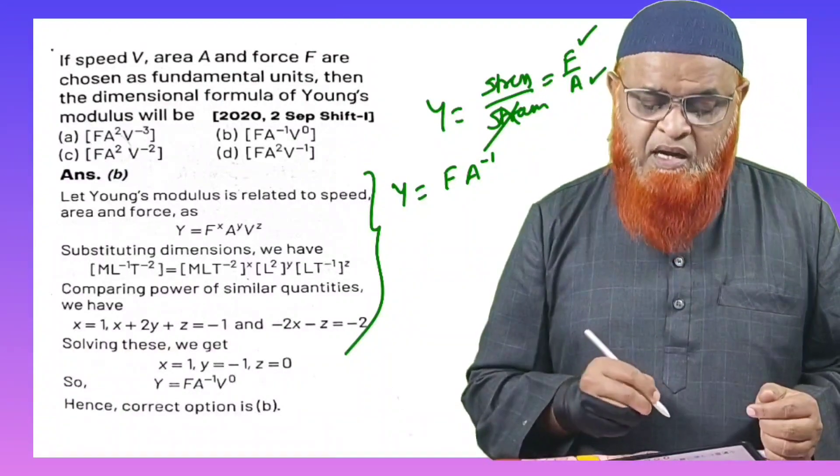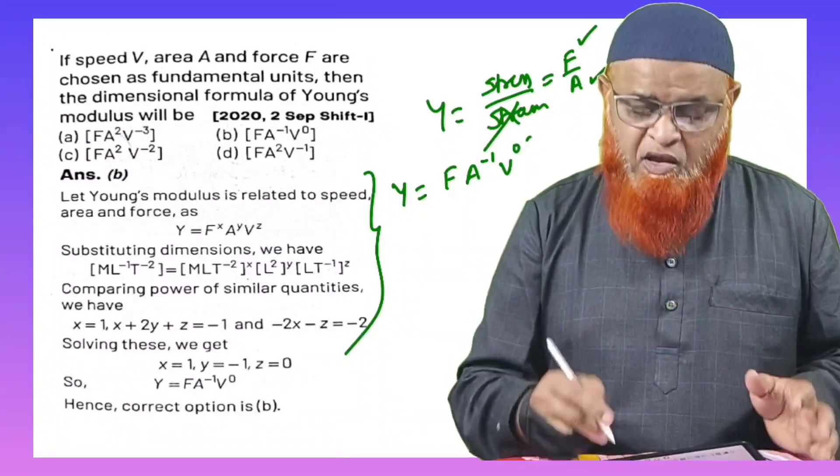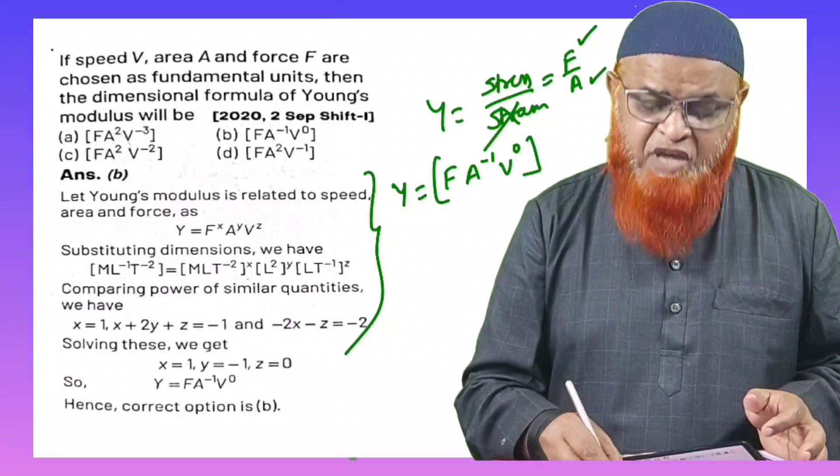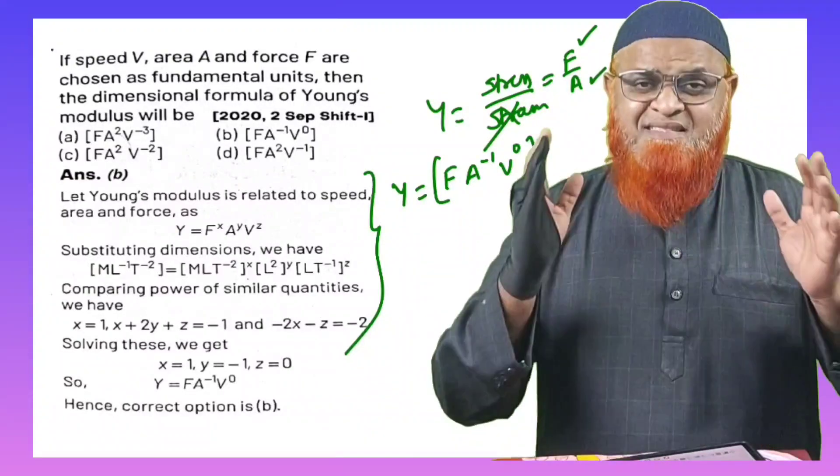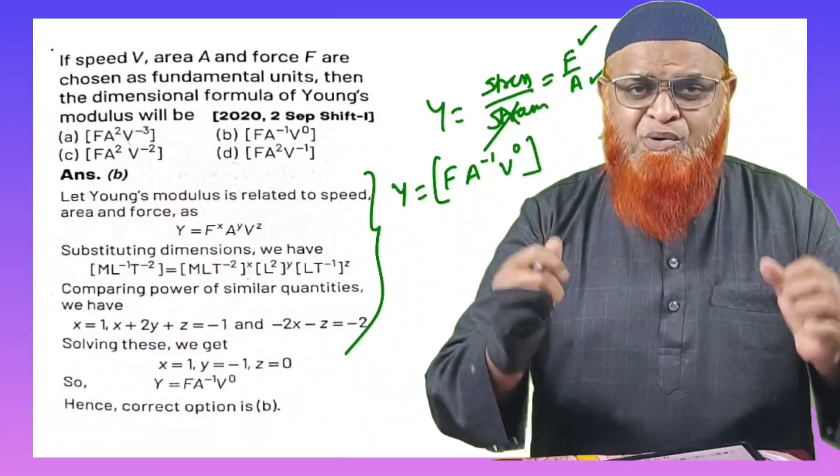But in this formula there is no velocity, so just directly I'll write V power zero. That's it. Did you enjoy?